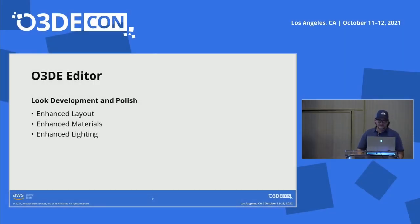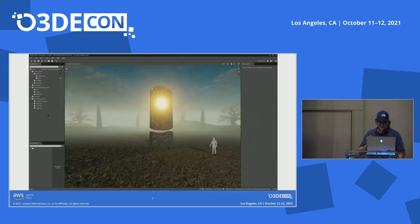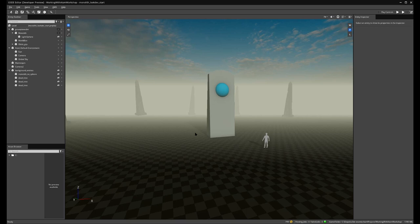We have one more segment. The second segment primarily focuses on the O3DE editor. We're going to add some additional look development and polish to this scene — enhance the layout with some additional objects, create some better looking materials, and work on the lighting a little bit.